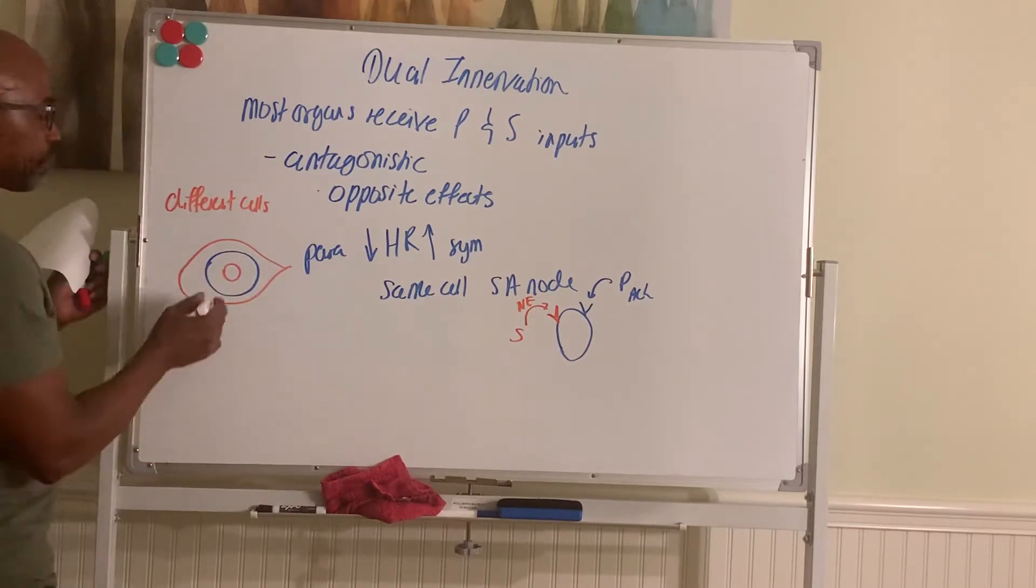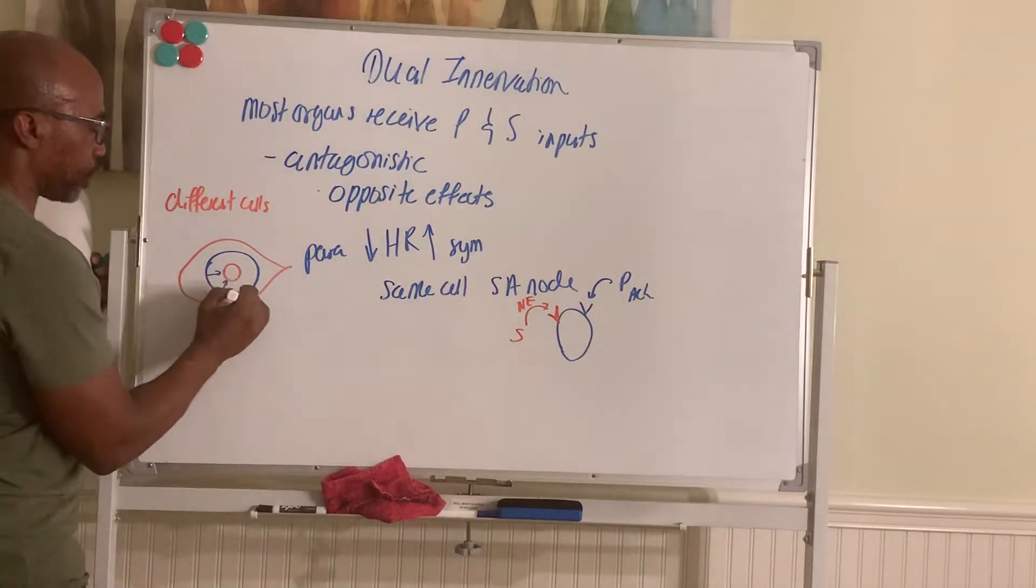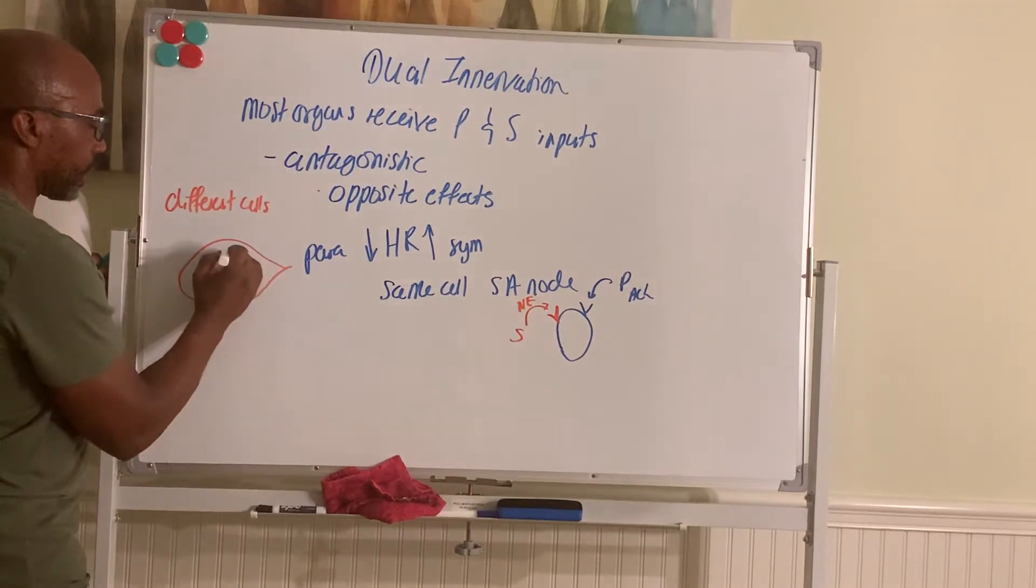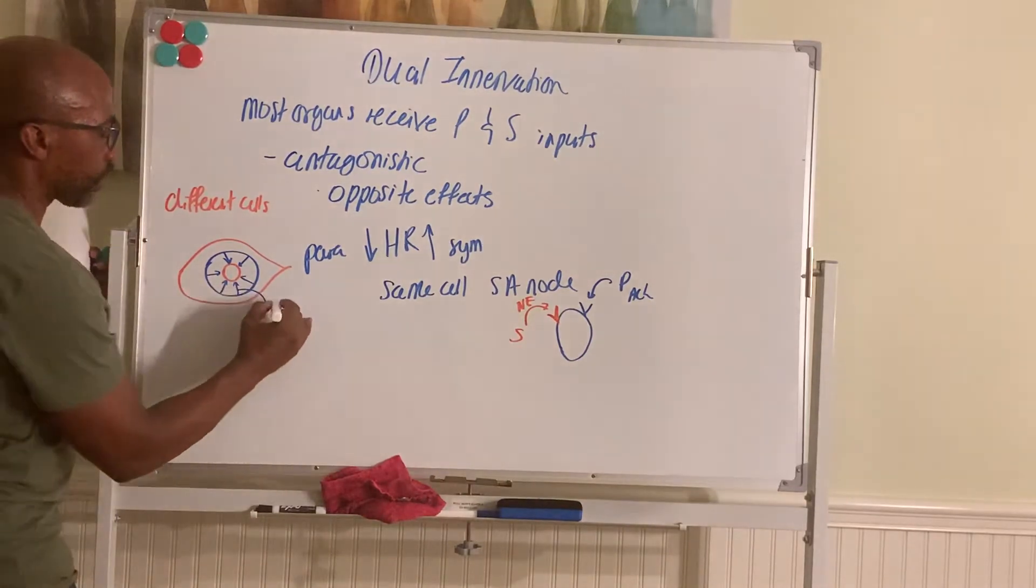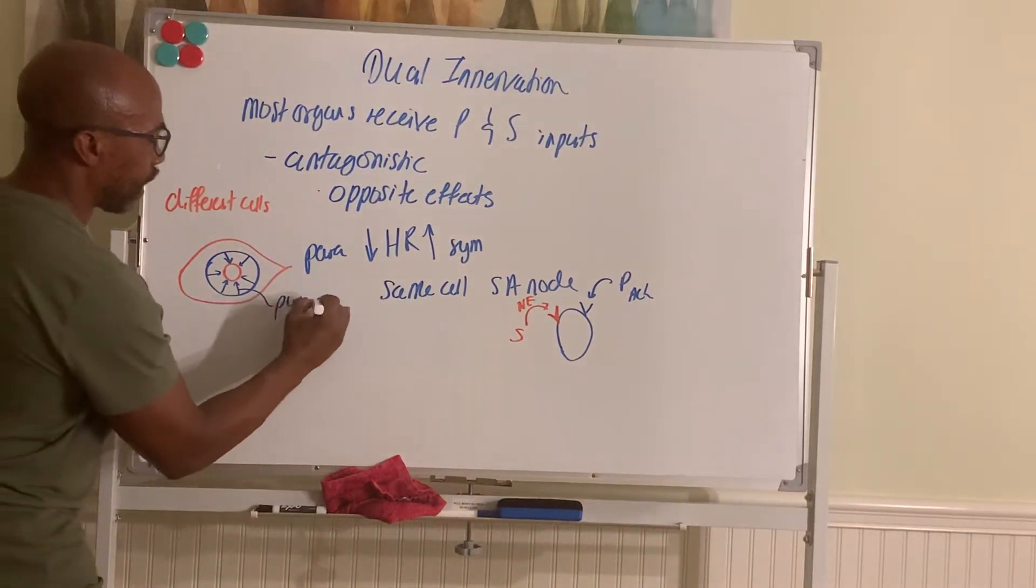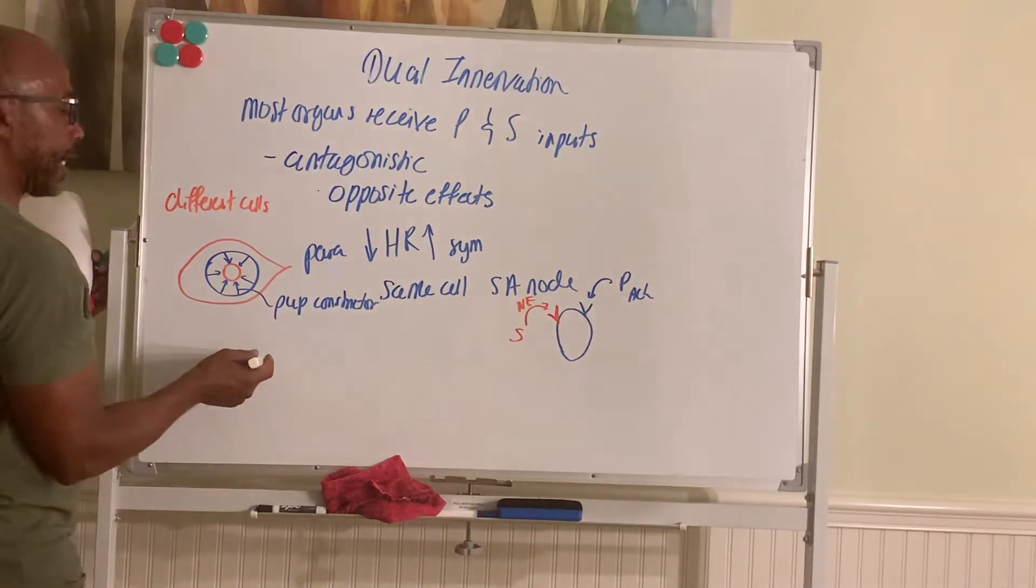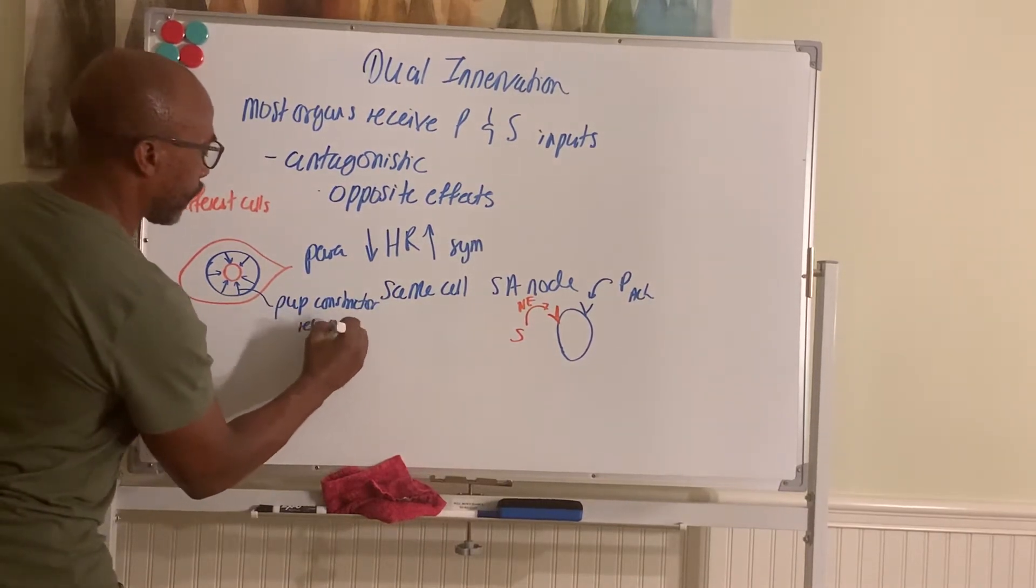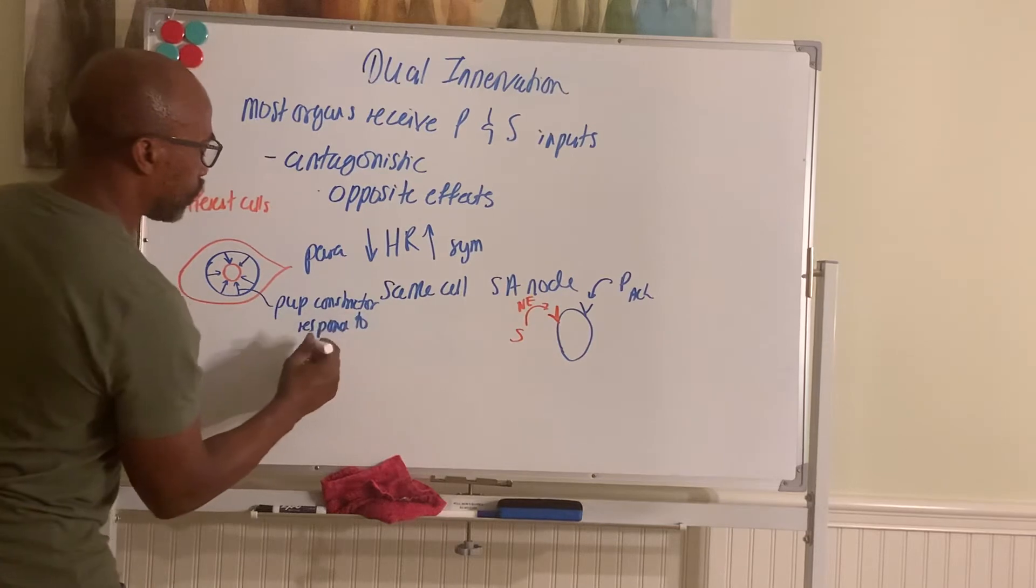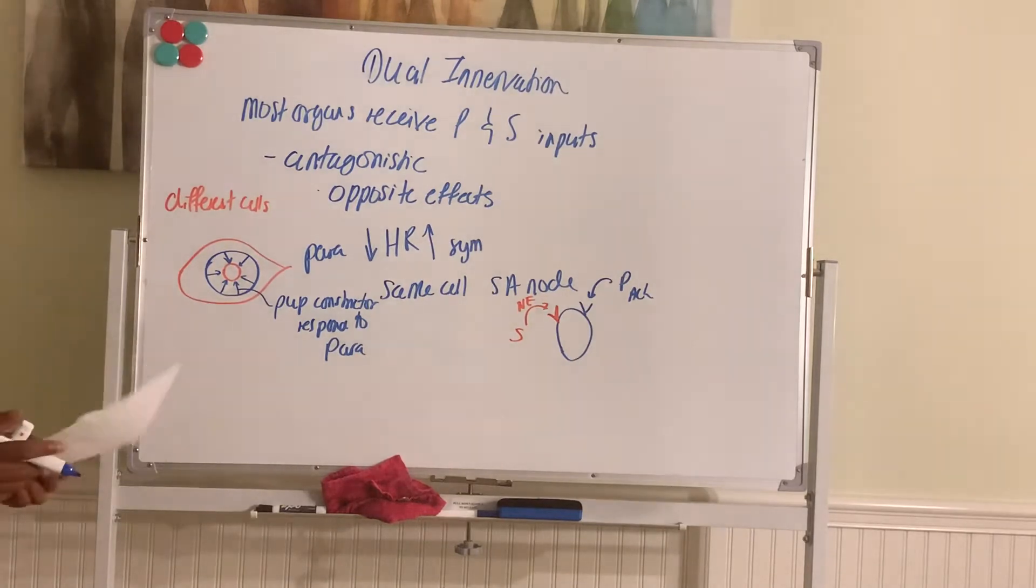And so in the iris, you have two muscles. You have muscles in the iris that tend to push or close the pupil. These muscles going inward, we call these muscles your pupillary constrictor muscles. They constrict the pupil. And so these muscles respond to your para division. They have basically your ACH receptors on them.